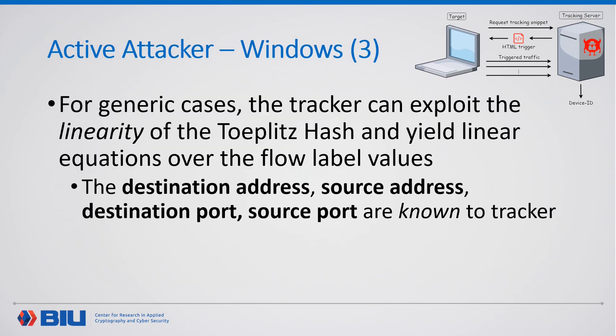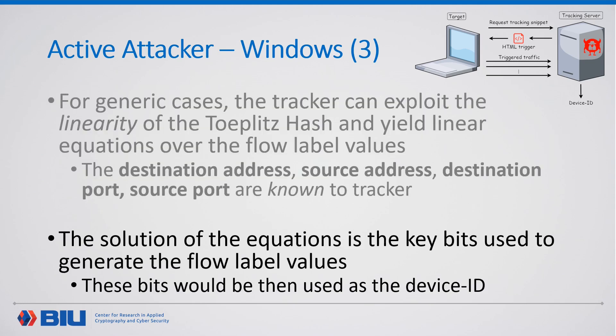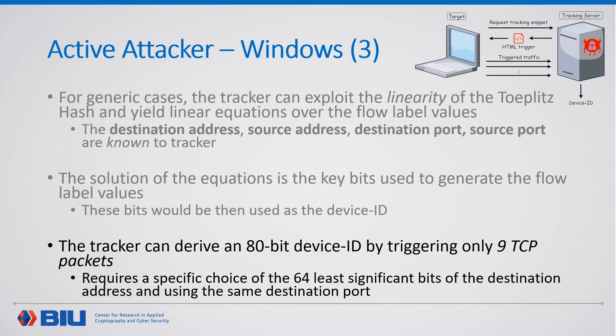What about generic cases, such as TCP or different source ports? We can exploit the linearity of the Toeplitz hash and set up linear equations on the flow label values, because the hash input fields are unknown to the tracker. The solution of the equations is the key bits used to generate the flow label, and they would serve as the device ID. We showed that by specific choice of the least significant 64 bits of the destination address and using the same destination port, it is possible to derive an 80-bit device ID by triggering just 9 packets.